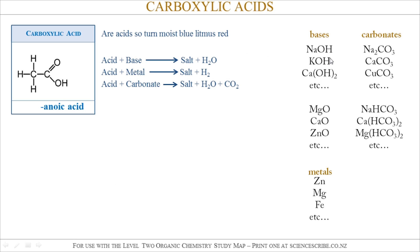Some examples of bases you might encounter are hydroxides such as NaOH, KOH, and calcium hydroxide. Other examples of bases are metal oxides like magnesium oxide, calcium oxide, and zinc oxide. Examples of carbonates include sodium carbonate, calcium carbonate, and copper carbonate, as well as bicarbonates or hydrogen carbonates — those with HCO₃ in their formula — which act just like carbonates in their reactions.